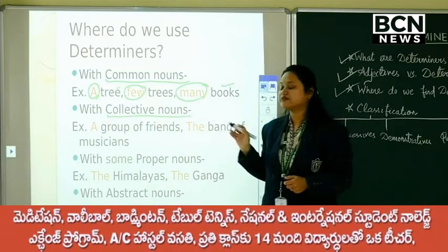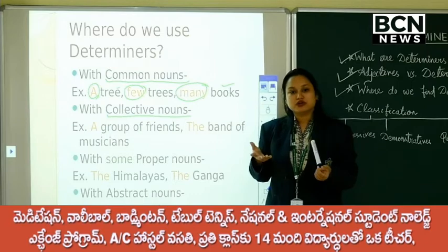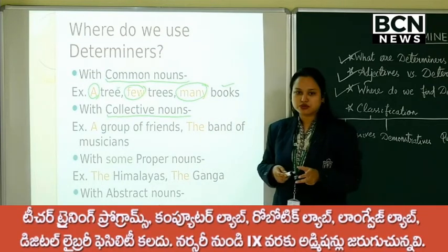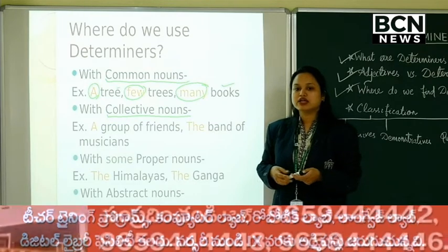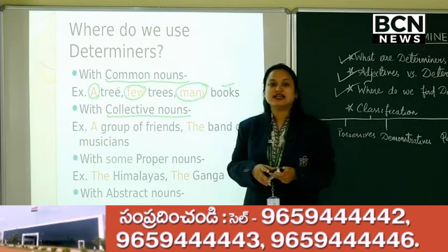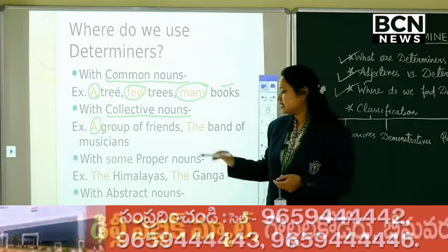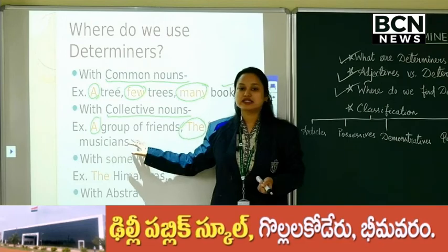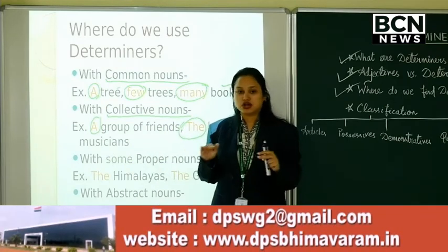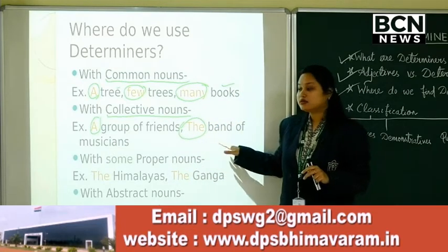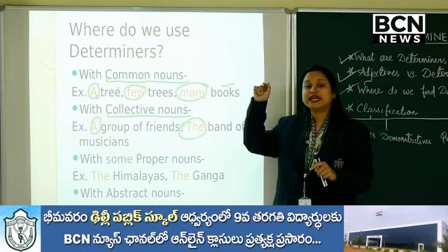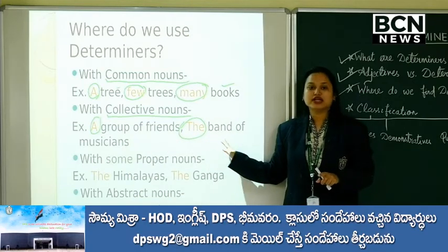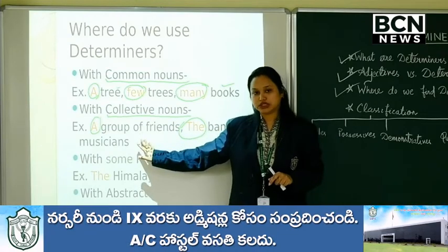Next, we are saying determiners are used with collective nouns. When we say collective, the word collection comes to mind — it is a collection of nouns. A band of musicians, a panel of judges, a swarm of bees — these are collective nouns. A group of friends — it is not any particular group, it could be any group. But when I say the band of musicians, I am hinting at a particular band of musicians. This is talking about particularity.